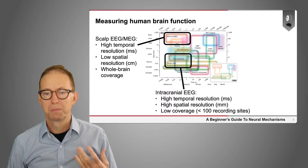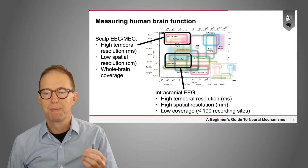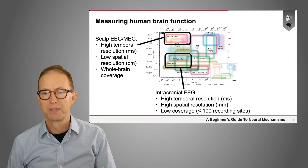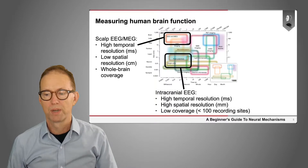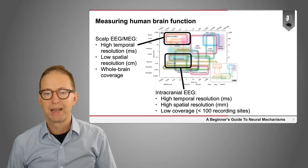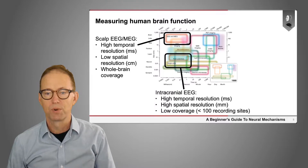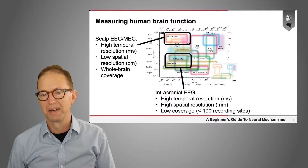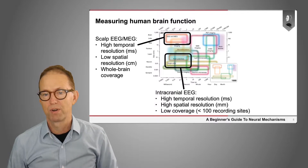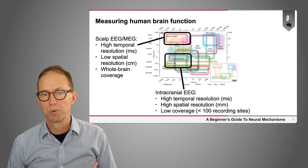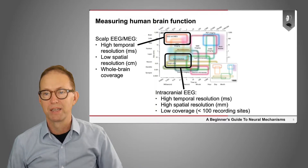One method that's fairly limited but sometimes available is intracranial EEG — measurement of electrical activity directly from inside a human brain, which primarily happens in the context of surgery for people undergoing resection for epilepsy. This method has high temporal and high spatial resolution. Its limitation is generally low coverage: you might have no more than a hundred recording sites across the brain, and the regions differ between individuals because they're based on clinical needs, not scientific plans.